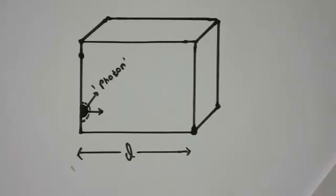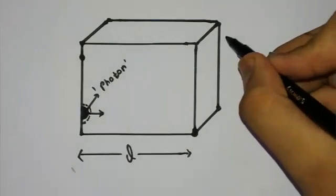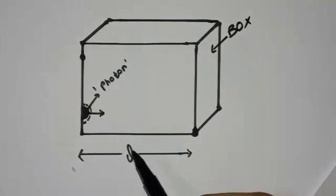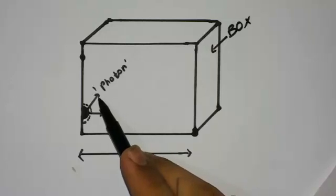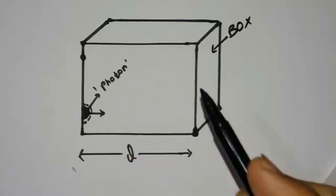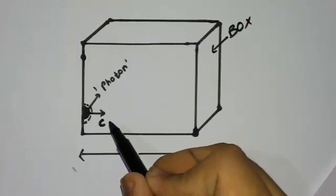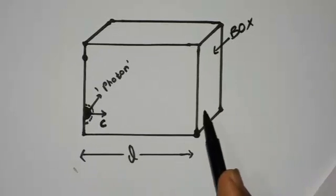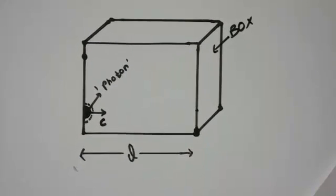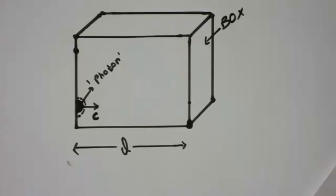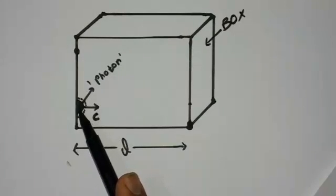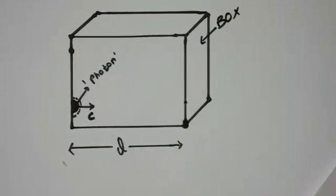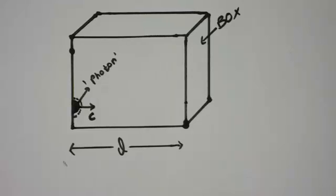In this diagram you can see a box of length L, and this is the photon — the arrow is there to indicate it's a photon. The photon is moving from the initial position of the box to the final position. Our condition is that the photon starts on one side of the box and travels toward the opposite side.